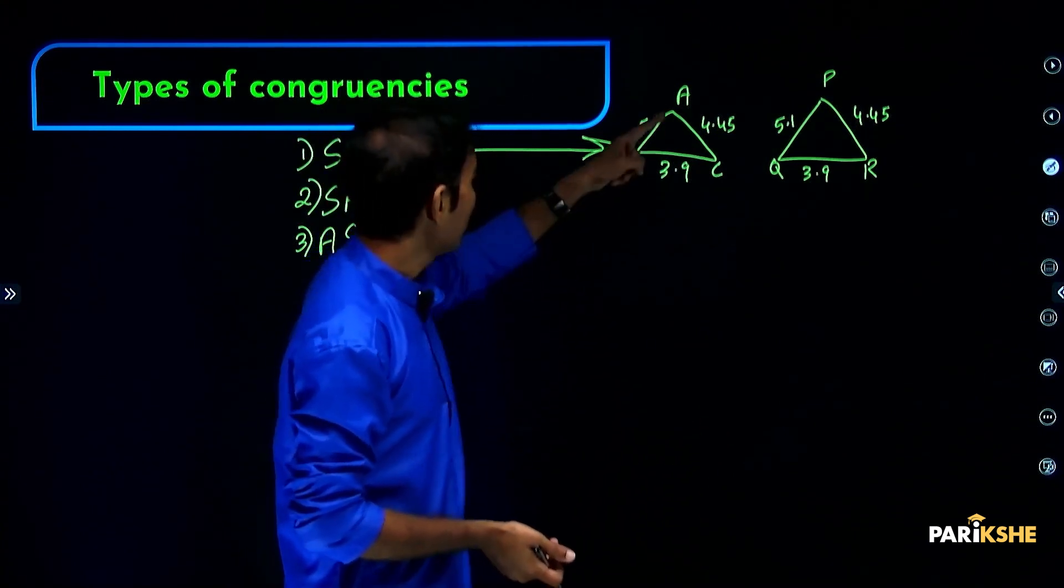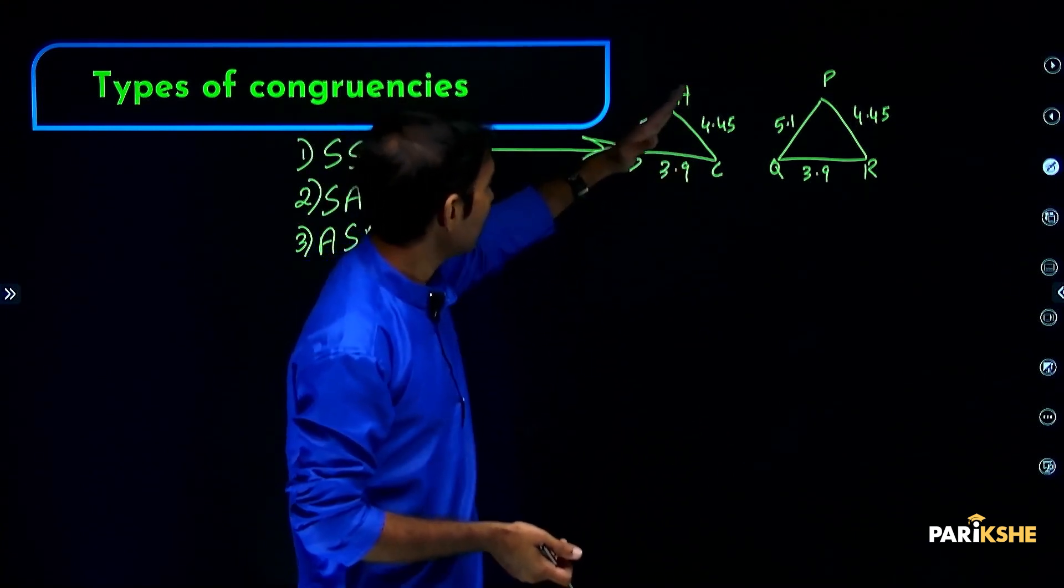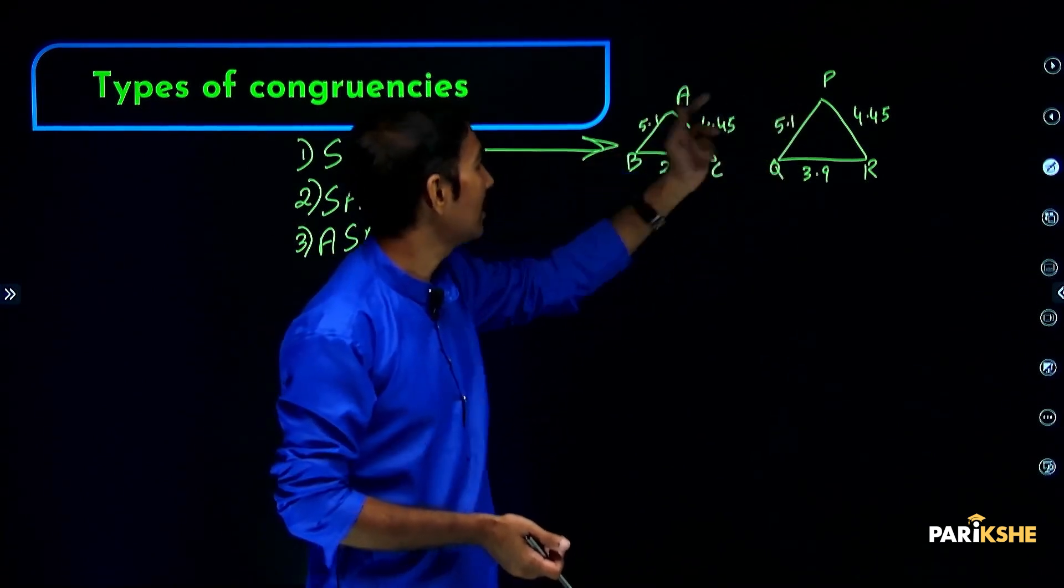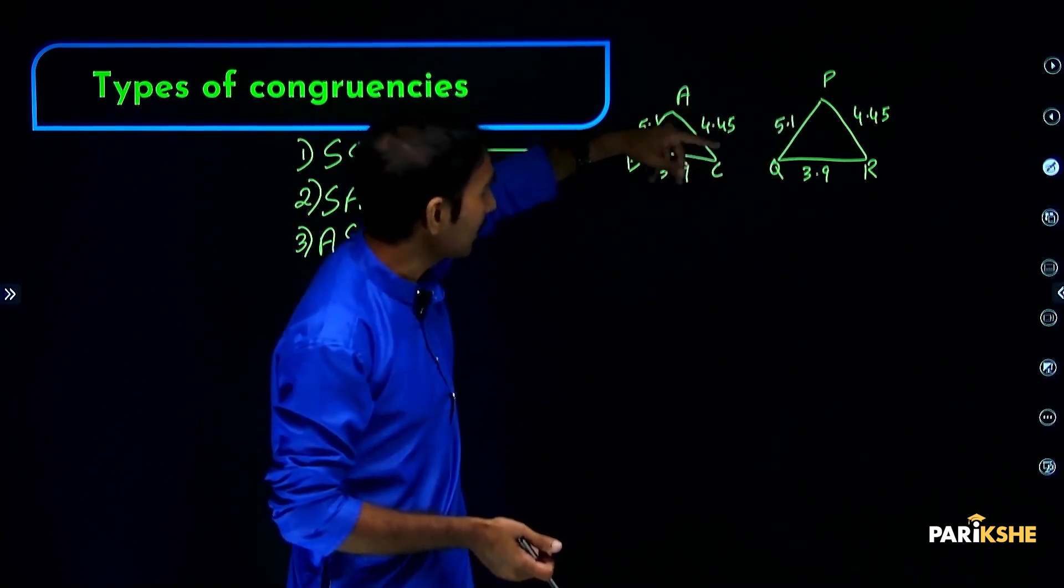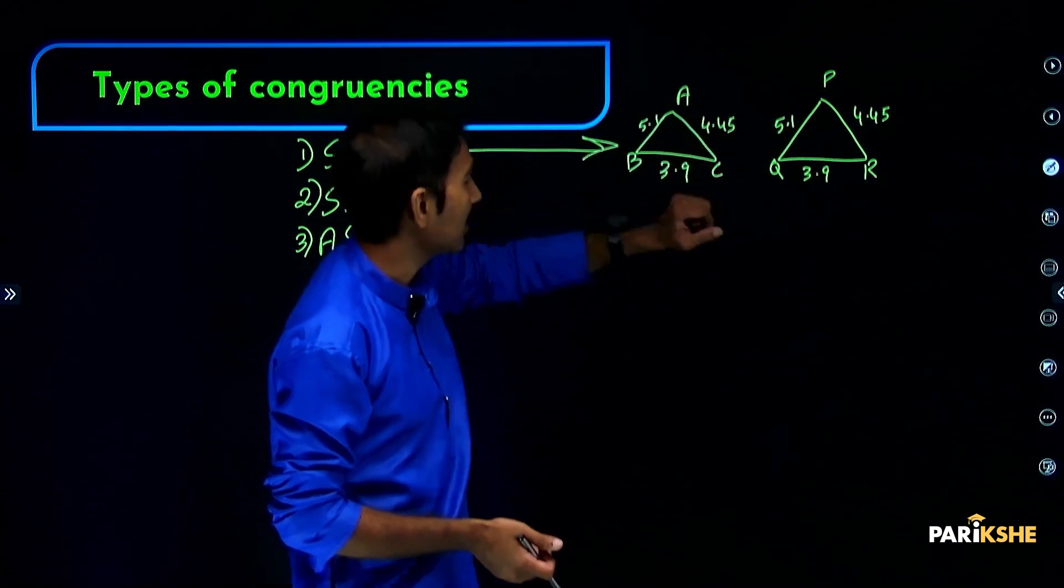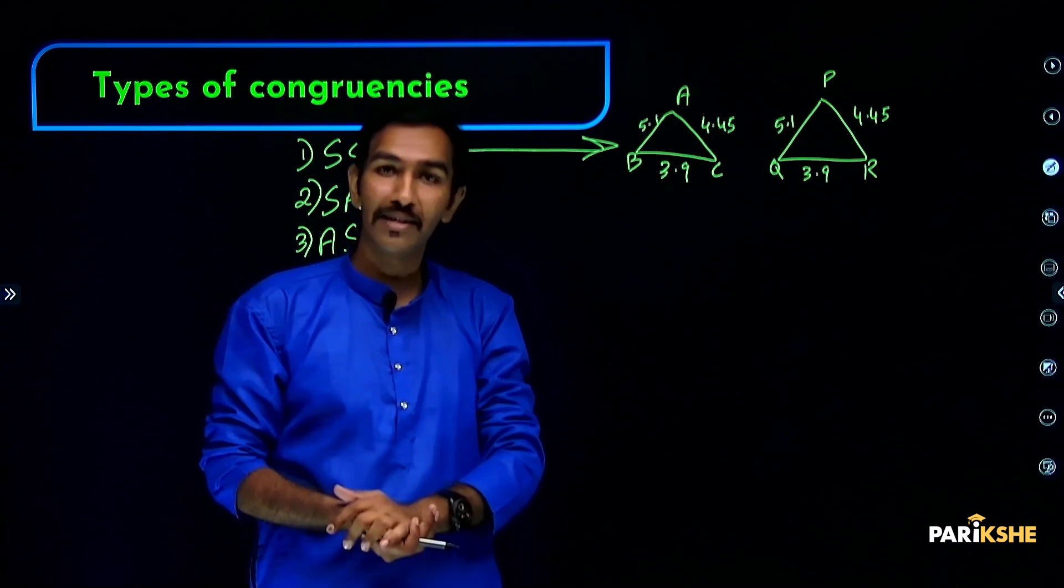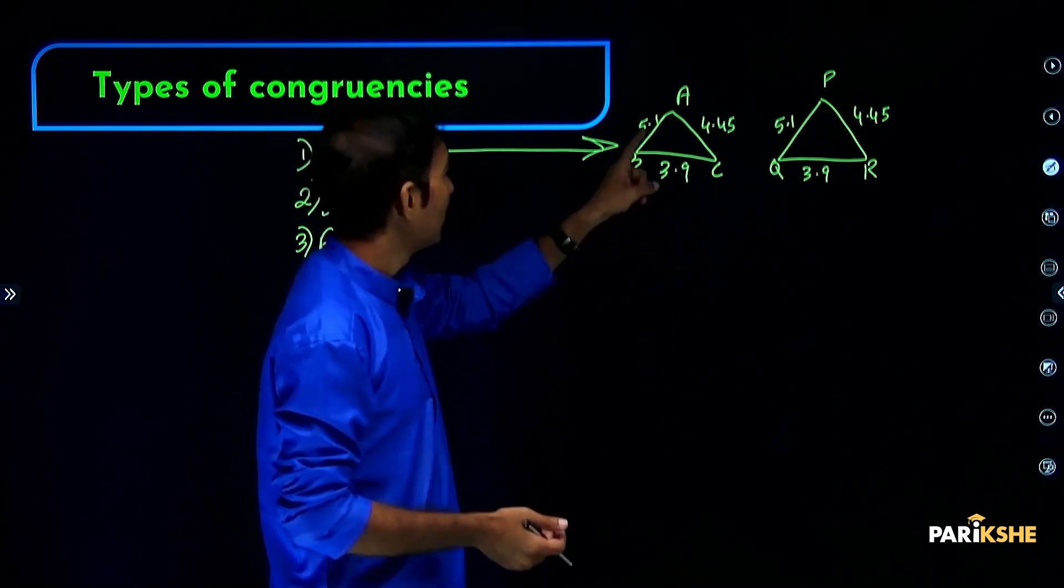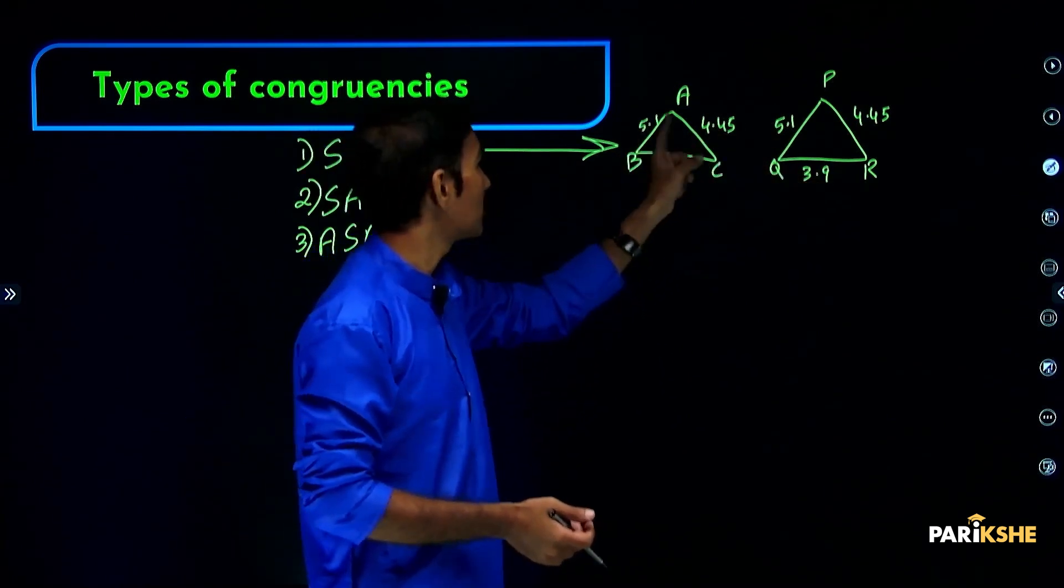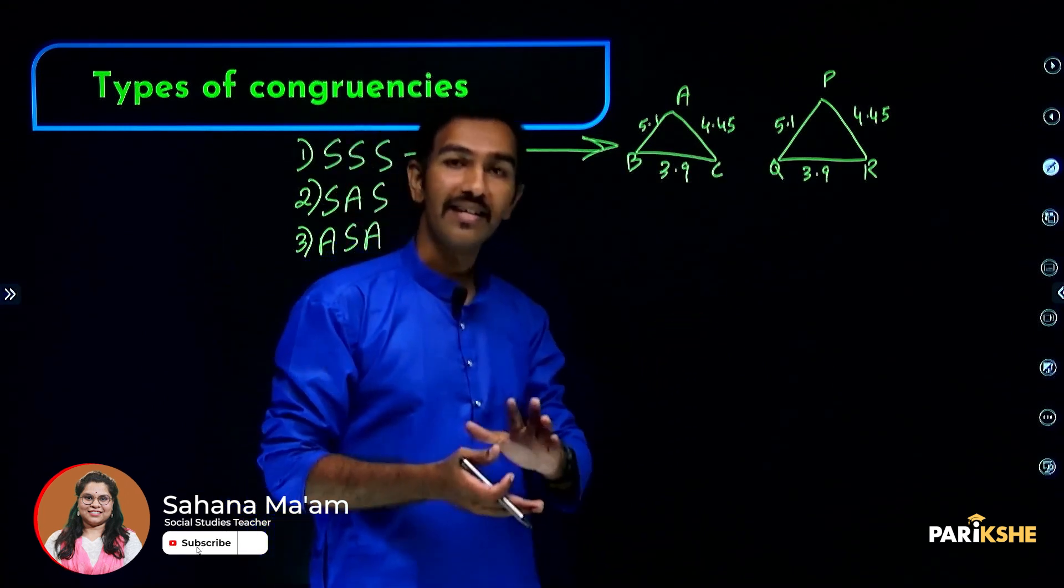Then we call this triangle ABC is congruent to triangle PQR by SSS congruency. One side and its corresponding side in another triangle are the same. This side and its corresponding side in another triangle are the same. And this side and its corresponding side in another triangle are also the same.